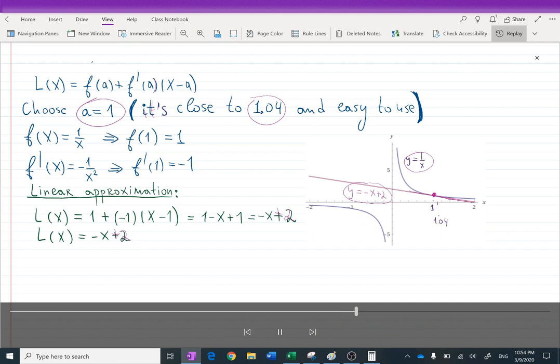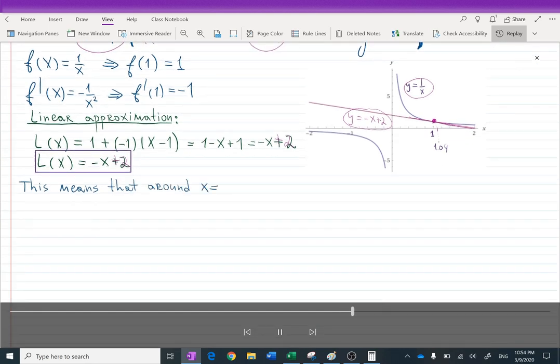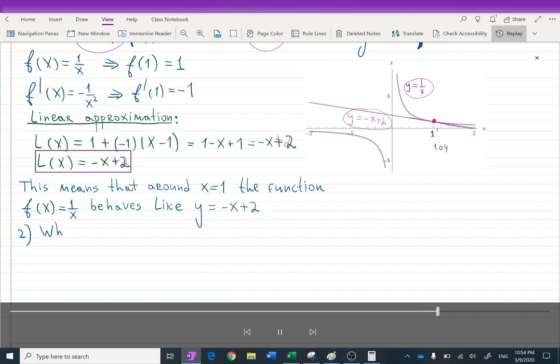So here is 1.04, and here's in the box our linear approximation. So this means that around x equals 1, only here, the function we're given, which is 1 over x, behaves just like a linear function, y equals negative x plus 2. That's why we call it linear approximation.